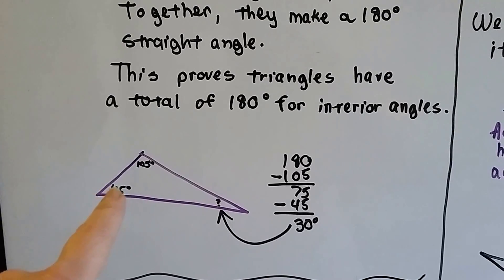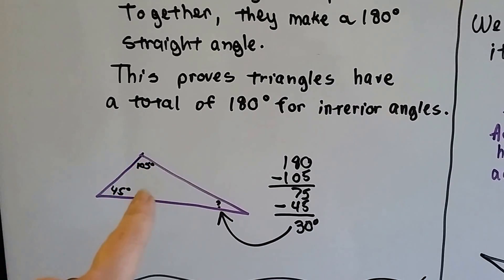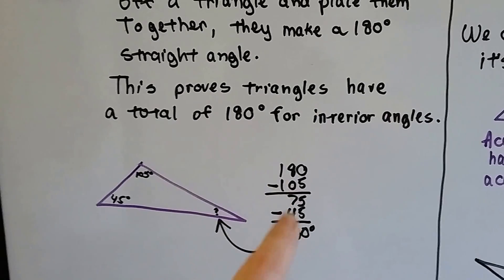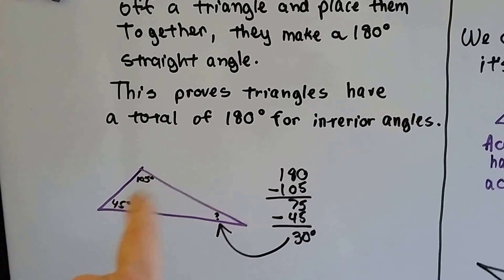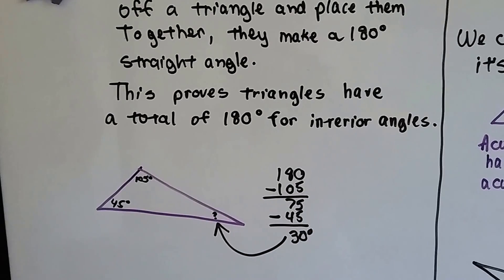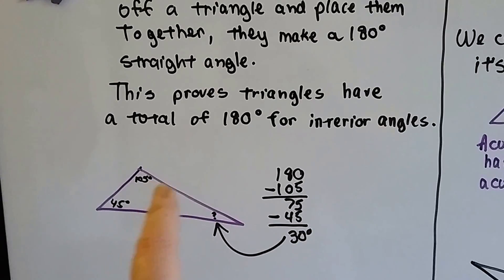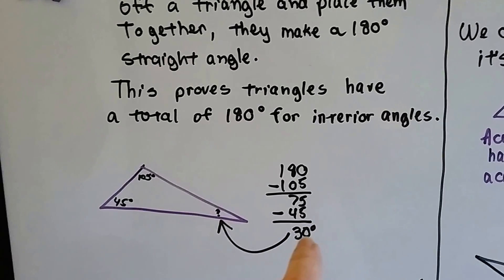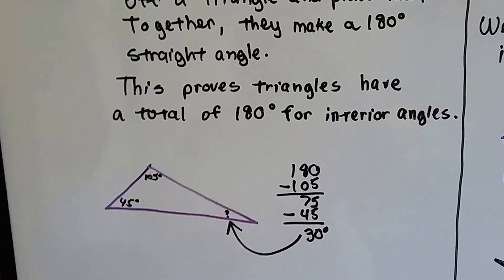If this is 45 degrees, and that's 105 degrees, it's easy to find the missing measure because all we do is subtract it. We add these together and then subtract it from the 180, or subtract and subtract, whichever way you want. If we take 105 away, it's 75. And if we take 45 from that, we're left with 30. We know that that angle is 30 degrees.